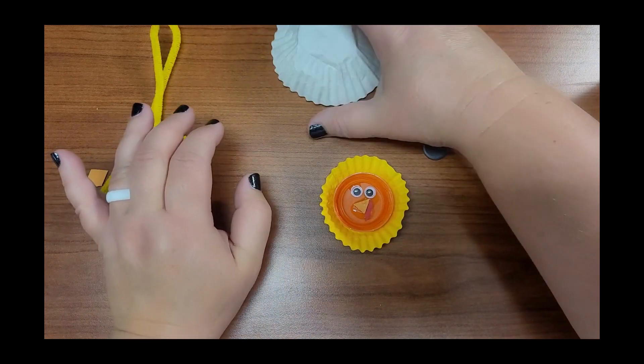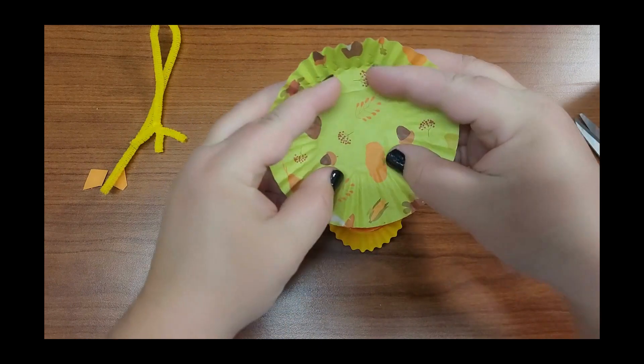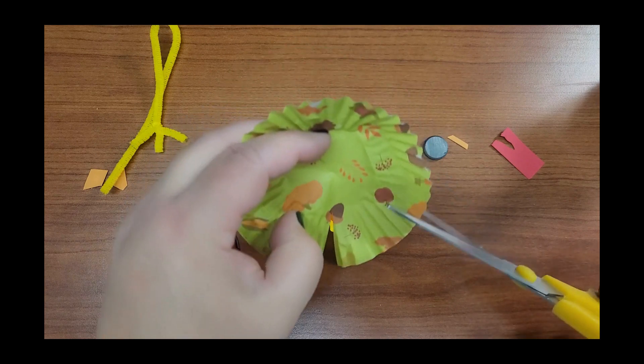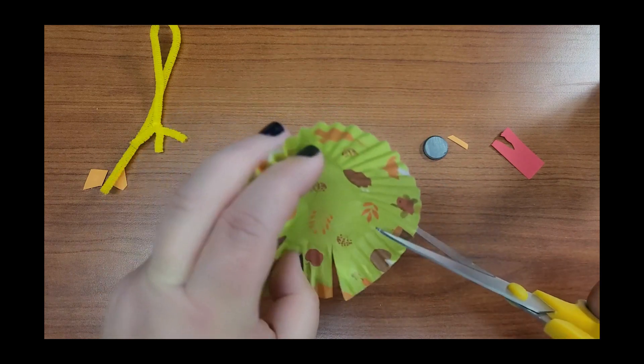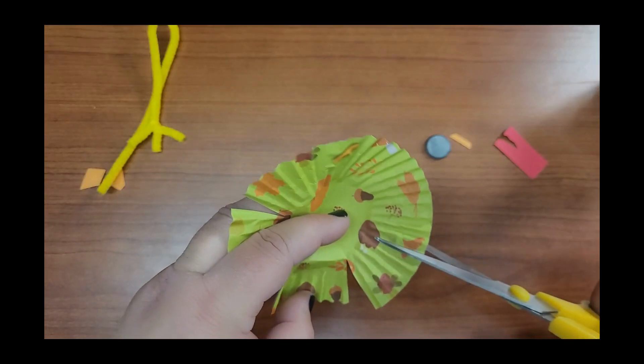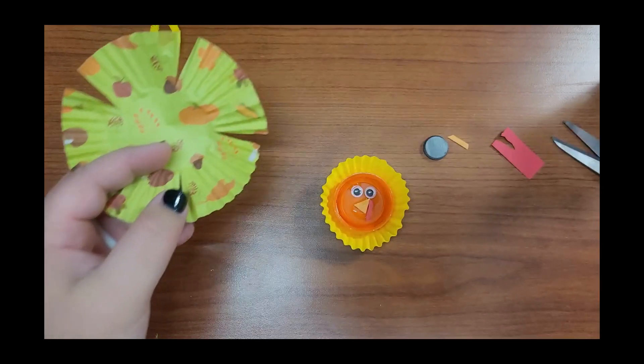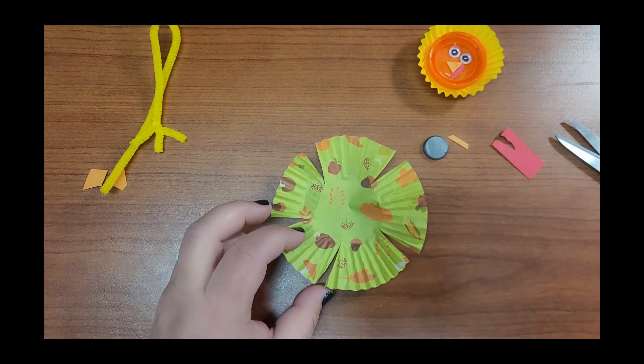Then we're going to take our big cupcake liner and turn it inside out, and we're going to make a few cuts in this just to have it lay a little flatter since we're going to be putting our magnets on the fridge. We can go around and make some cuts in that. Then we're going to get our glue.